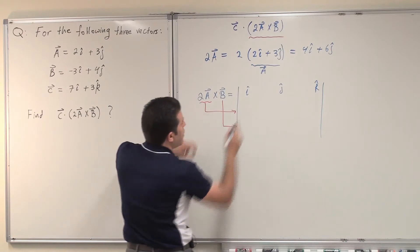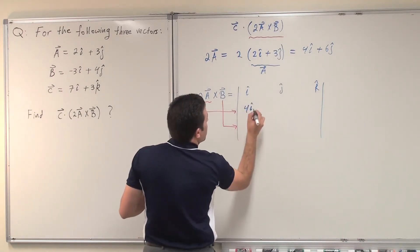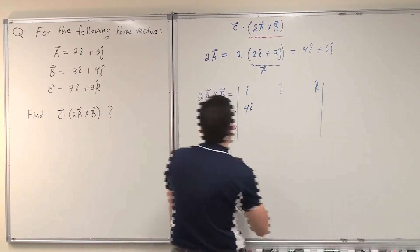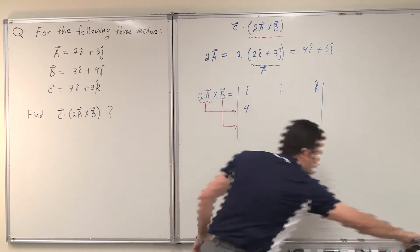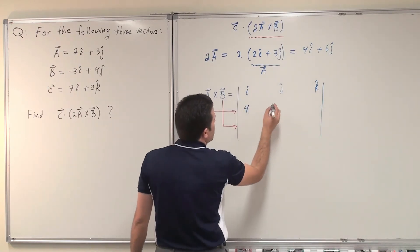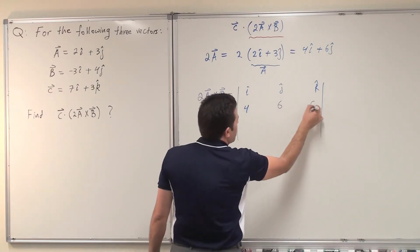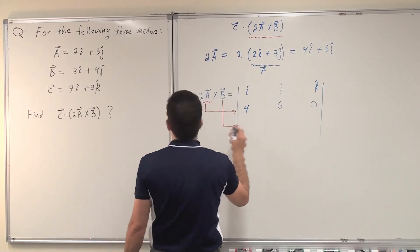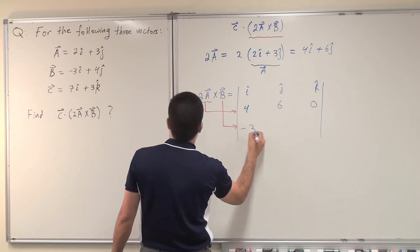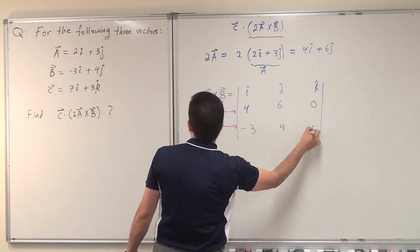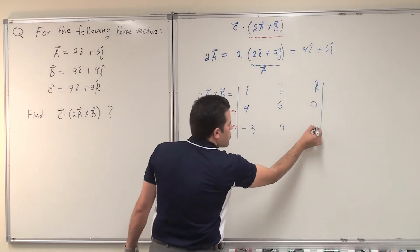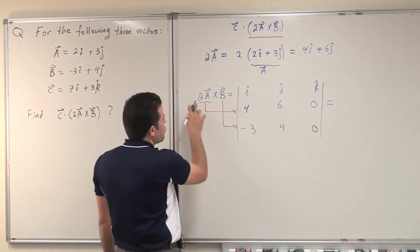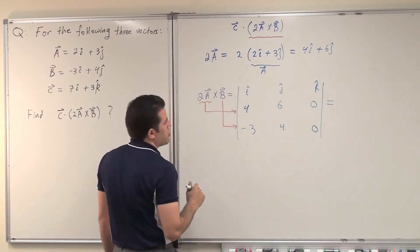So 2a is basically the components 4, 6, and 0. And for vector b, the components are minus 3, 4, and 0. We use the determinant method — I only deal with the components in the determinant. Now if I do the cross product between these two vectors, 2a cross b, then I will do the dot product with c.